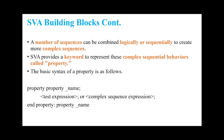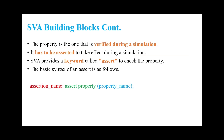The property is the one that is verified during simulation. It has to be asserted to take effect during simulation. SVA provides a keyword called 'assert' to check the property. The basic syntax for assert property is: an optional assertion name, then 'assert property' as a keyword, and within parentheses we provide the property name. Whenever we define a property, we must assert it for it to take effect during simulation.